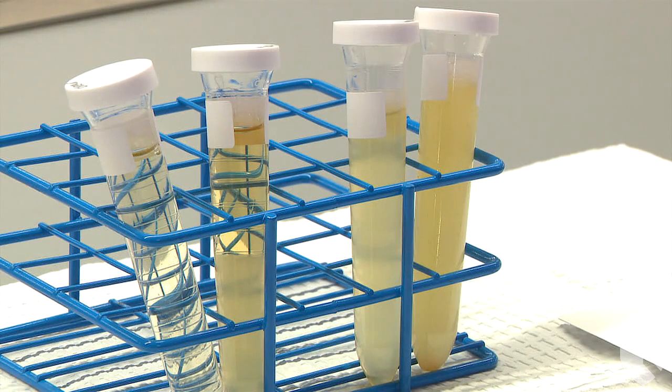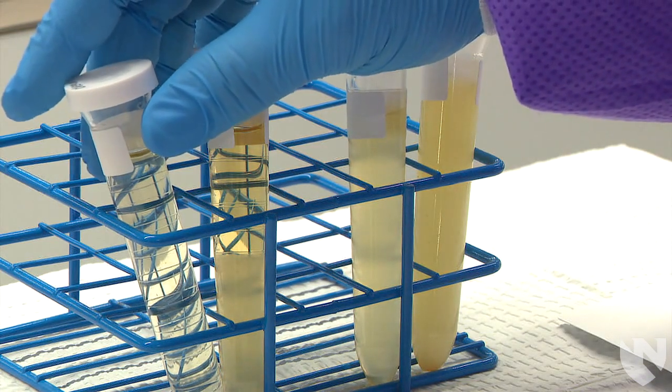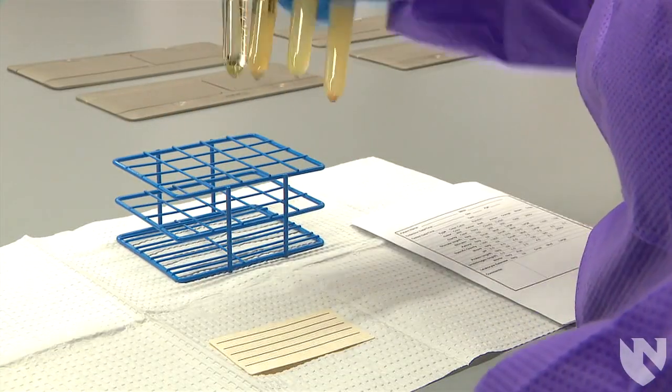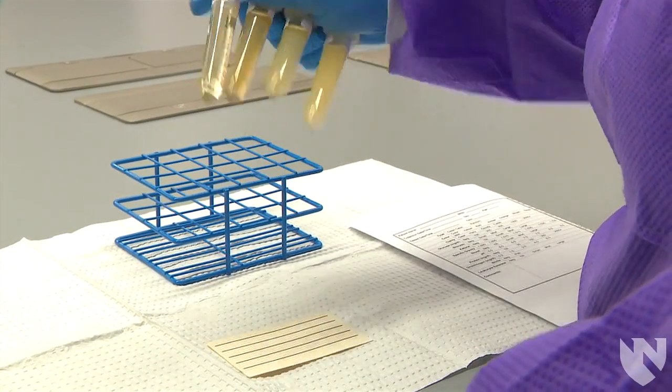The first part of a routine urinalysis involves an assessment of the physical properties, color and clarity. This video will demonstrate how to examine the clarity of urine. The specimen for this test is fresh, uncentrifuged urine in a conical test tube. We will begin by inverting the urine several times to mix it.